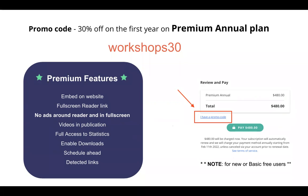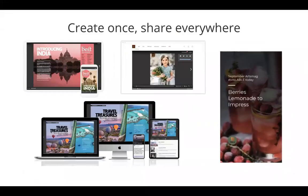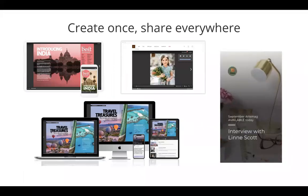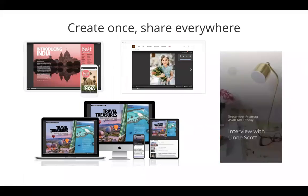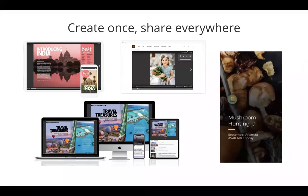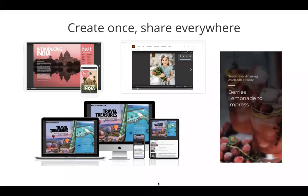If you'd like to jump on the premium annual plan, there's a promo code: before you click pay, type in 'workshops30' to get 30% off. You can also wait for our follow-up email going out on Friday, which will include a link to upgrade. Reach out to me if you have any issues. Thanks for joining — the motto of Issuu is 'create one, share everywhere': the only thing you need is the PDF you upload on Issuu, and then the magic starts.